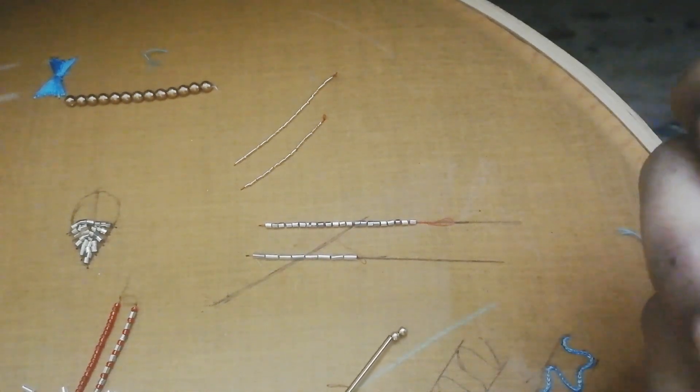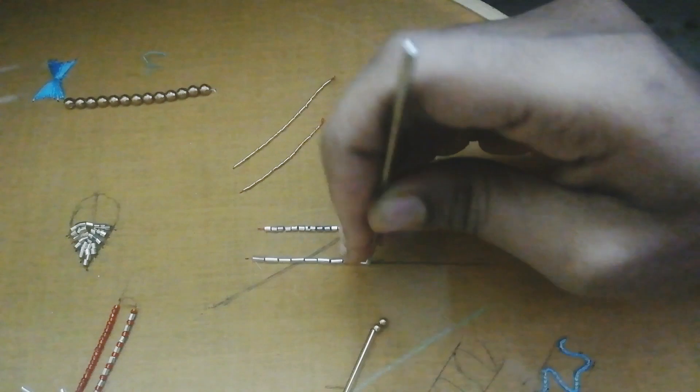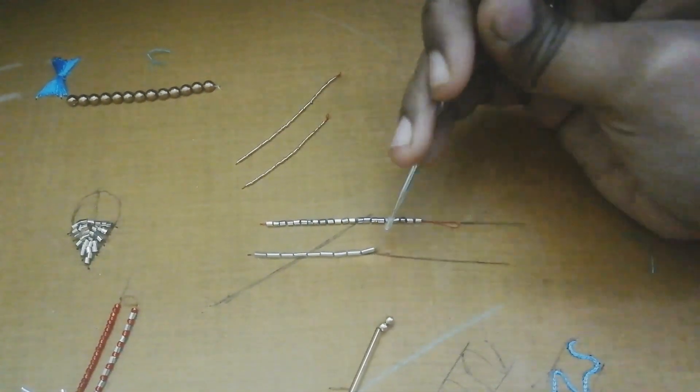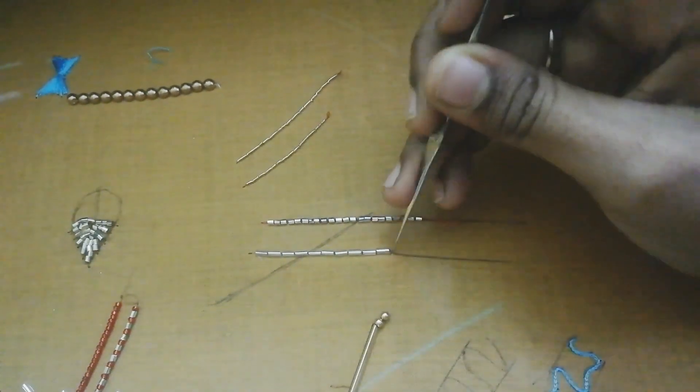My suggestion is to stitch the beads in the same way. We will do a small lock stitch. We will complete the end knot. When you complete it, you will be able to stitch it.